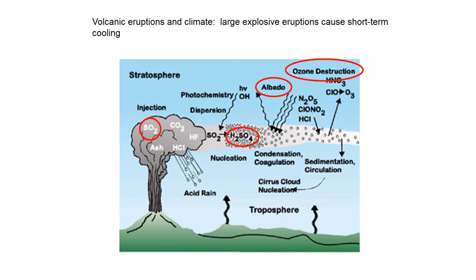When a volcano erupts, you get this big cloud of ash containing not just ash but gases — sulphur dioxide, CO2, hydrogen chloride, and a lot of water. You might think the ash could rain out and coat the earth in dark ash, affecting the albedo, but that's a very local effect. The ash doesn't travel far enough to change surface colour at a large scale. So let's think more about the volcanic gases.